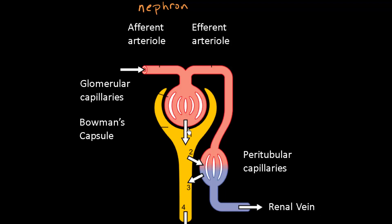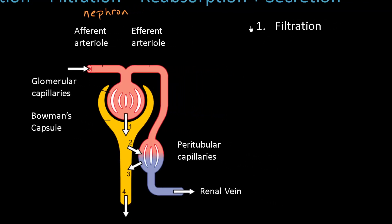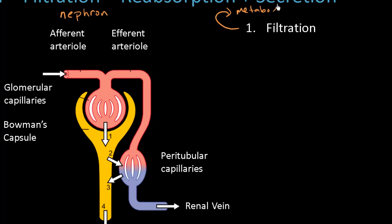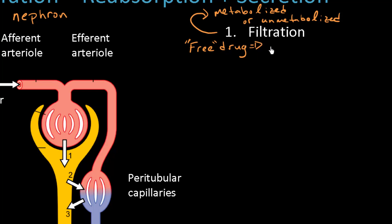Let's spend a moment and talk about each one of these steps. The first step is filtration. Filtration doesn't really care if the drug is metabolized or unmetabolized — we can filter both types. However, what filtration differentiates between is free versus bound drug, and really only free drug can be filtered. Some drugs can bind to plasma proteins, specifically to albumin, so drugs that are unbound to albumin can be filtered at the level of the glomerulus.